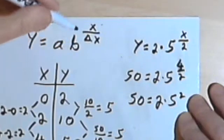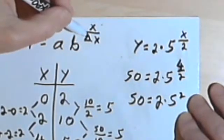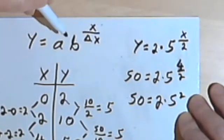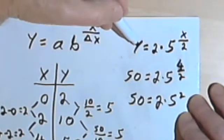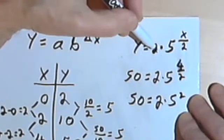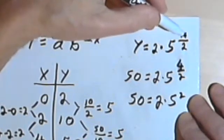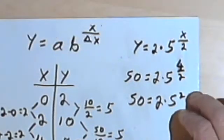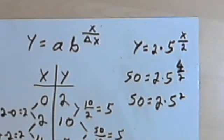So what we've got here is the full-blown equation, y equals ab raised to the x over delta x. That was the general form. In the specific form, y equals 2 times 5 raised to the x over 2. There's a bit more to say about this. I'm going to follow this up with another video. So stick around. I'll be back soon.